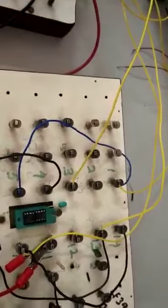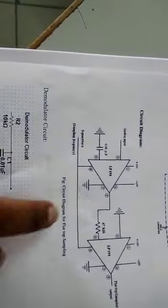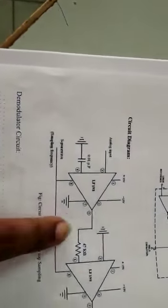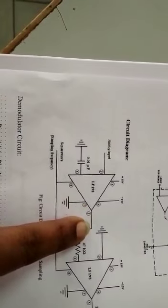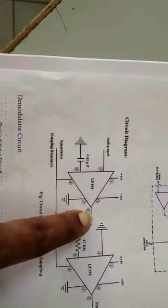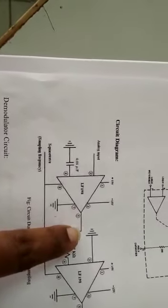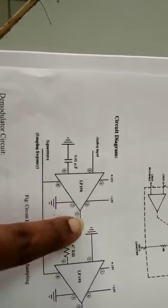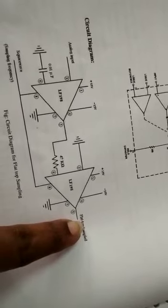In this circuit, you need to observe two things. First, observe the output at pin number 5 of the first LF398 stage, which acts as a sample and hold. Verify that you are getting a sample-and-hold output at the first stage. At the second stage — the next pin 5 — you should have the flat top output.